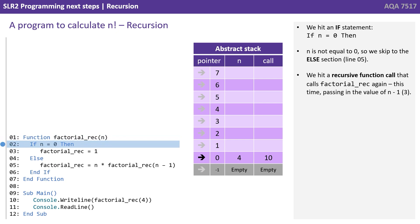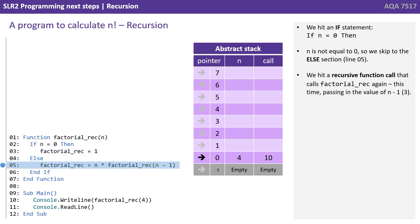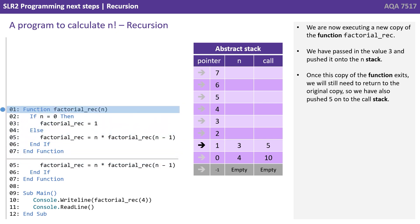We hit an if statement: if n equals 0. n is not equal to 0, so we skip to the else section, line 5. We hit a recursive function call — calls factorial_rec again, but this time passing in the value of n minus 1, so that's 3. We're now executing a brand new copy of the function factorial_rec. We've passed in the value 3 and pushed it onto the n stack. Once this copy of the function exits, we will still need to return to the original copy, so we have also pushed 5 onto the call stack.